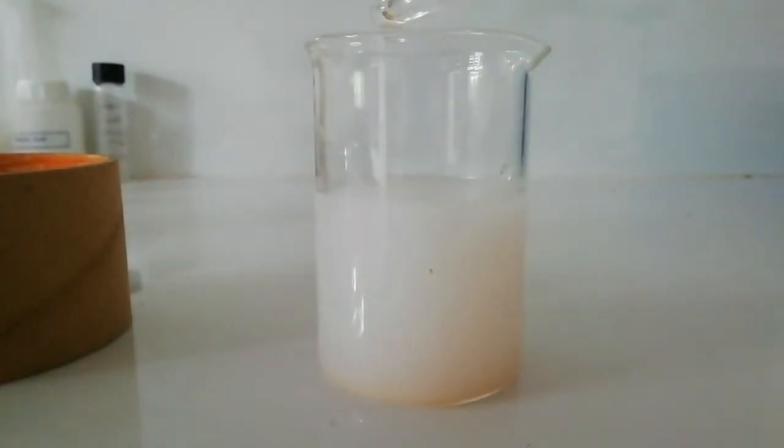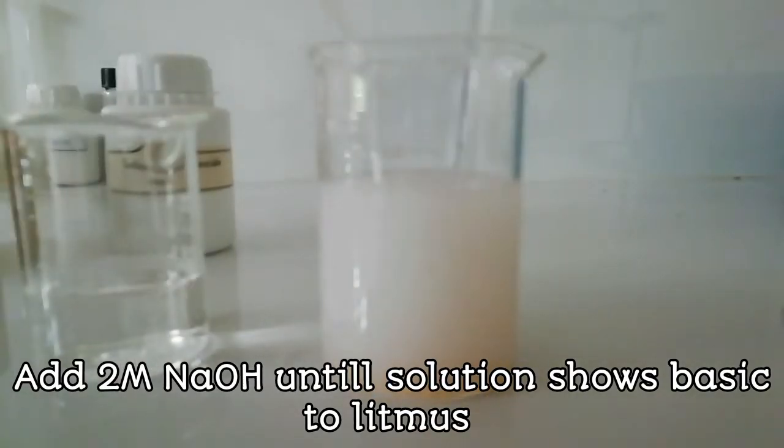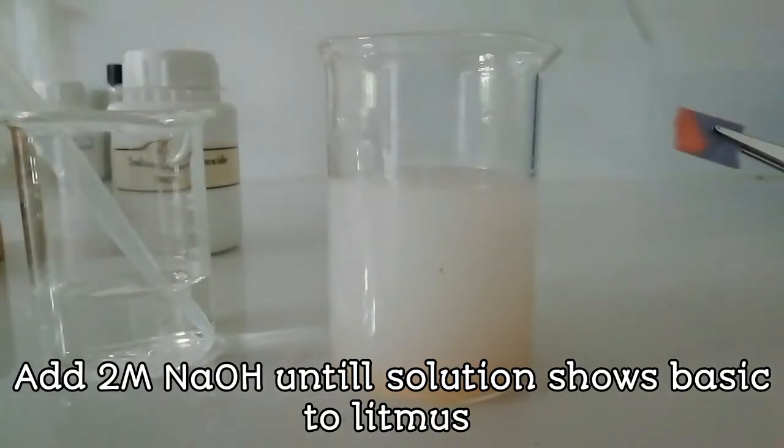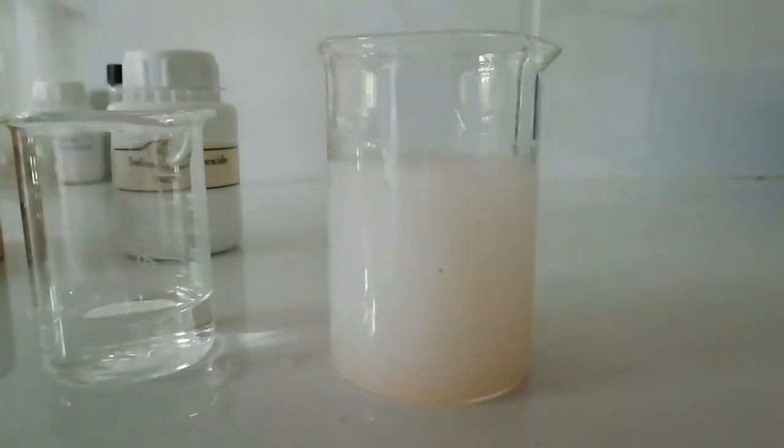For separating the wintergreen oil that we prepared, first we need to remove unreacted salicylic acid. For that, 2M sodium hydroxide solution was added to the mixture. We need to add sodium hydroxide to the mixture until the mixture shows basic to litmus.